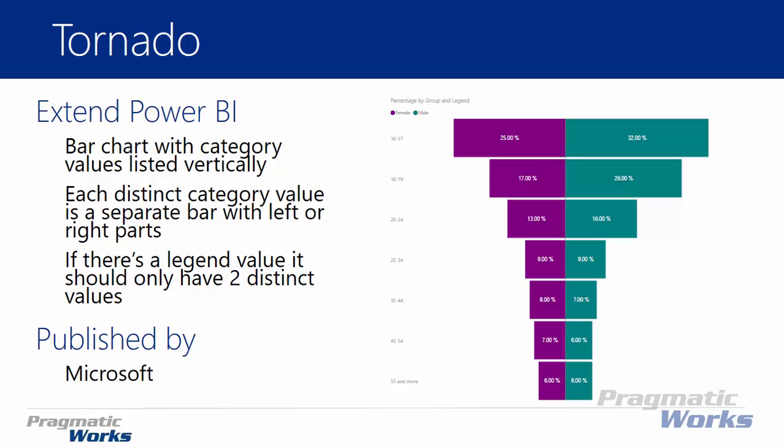You'll see the categorical values in my example on the screenshot listed vertically - 16 to 17 year olds, 18 to 19 year olds, 20 to 24 on that vertical list going from top to bottom. It also allows you to have each distinct category value in a separate bar, left or right parts. I have a left and a right part of it, female and males showing on the Tornado Chart. If there's a legend value, it can only have two distinct values, meaning you can't have three possible values show up on the Tornado Chart as it splits that bar.